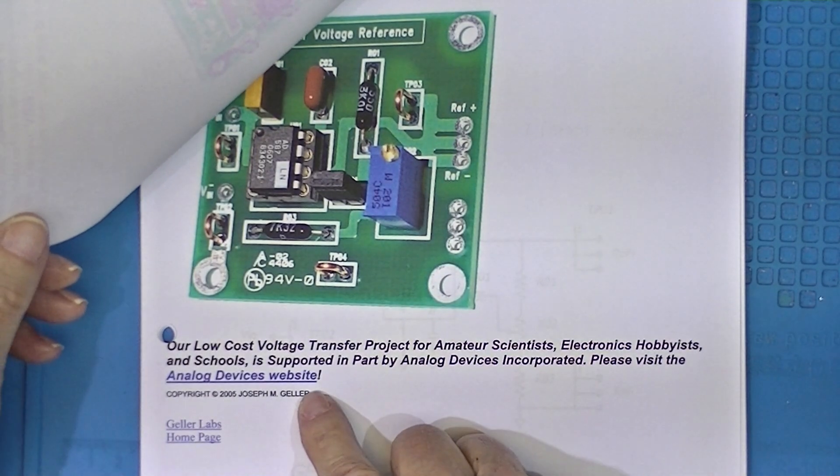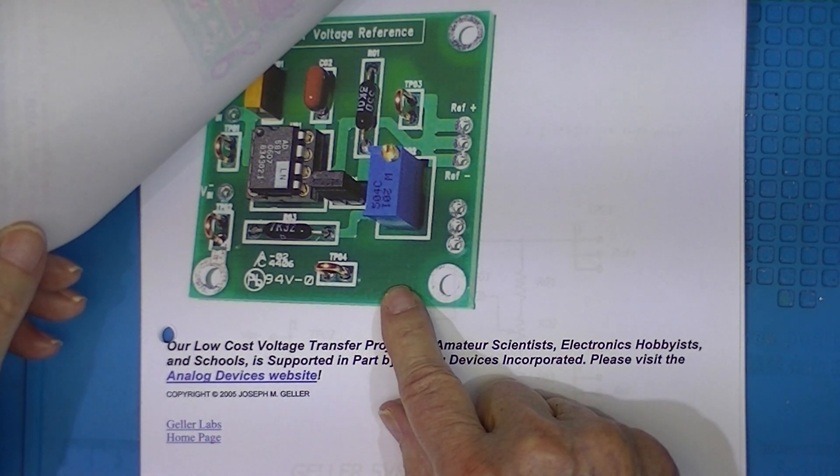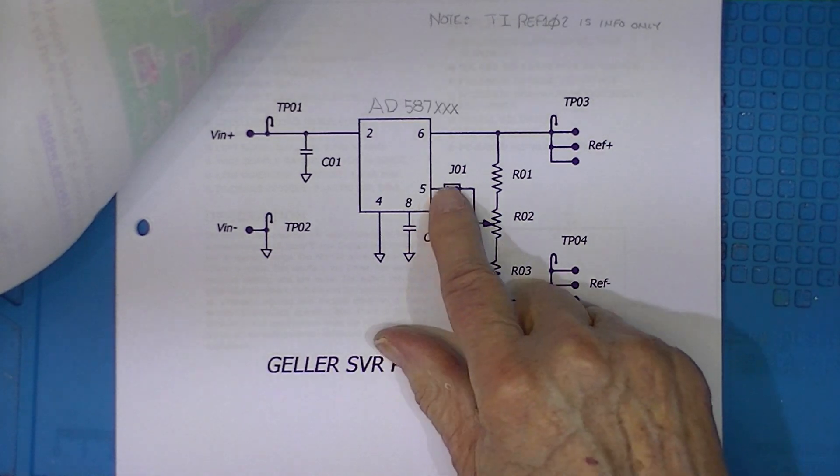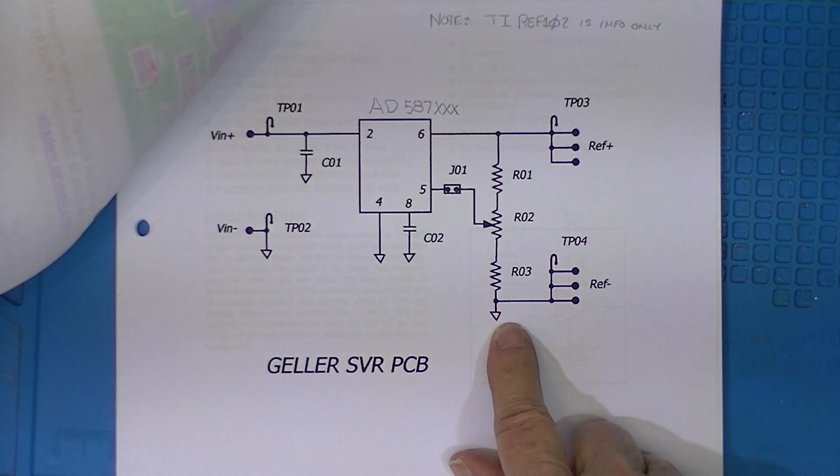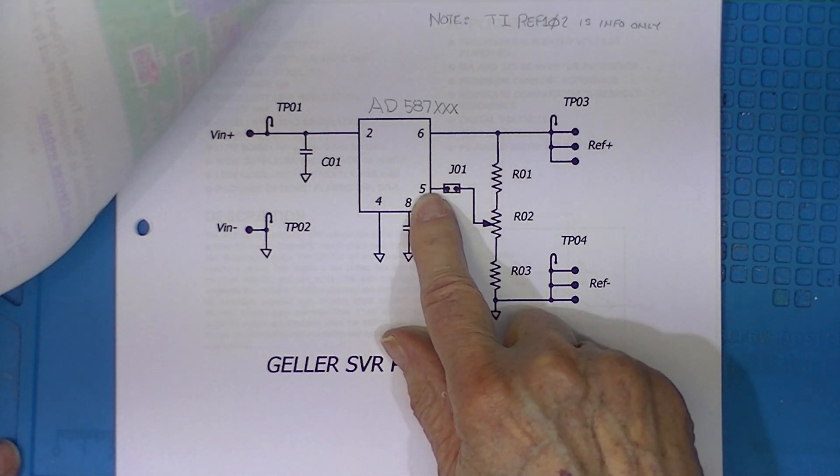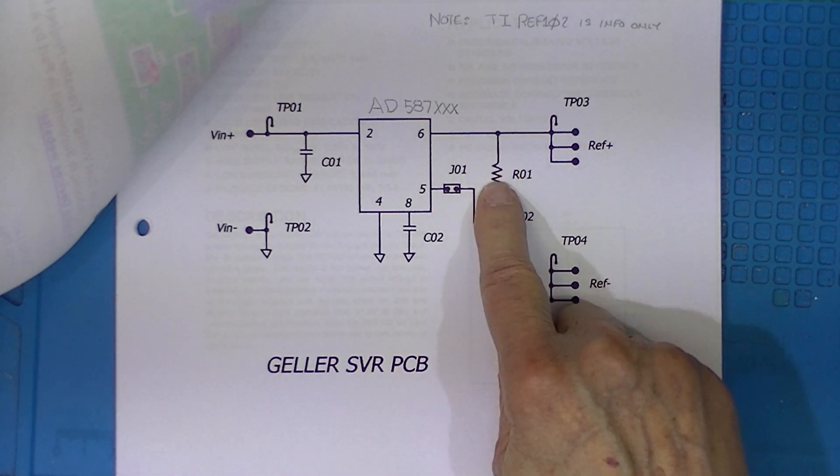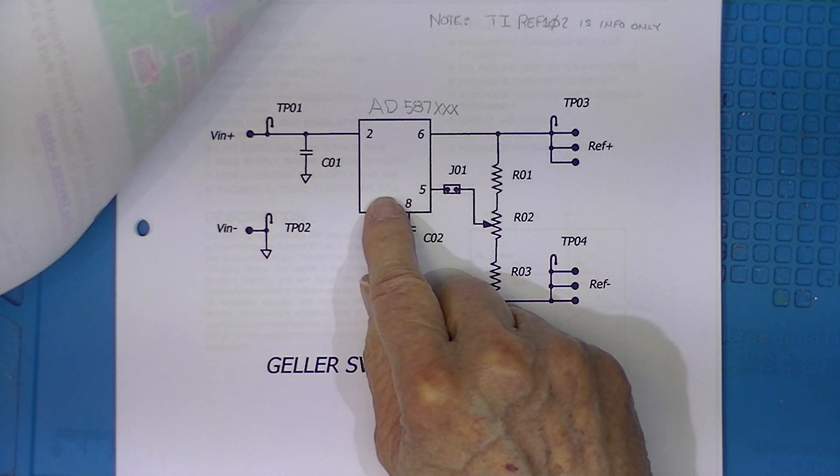I believe Mr. Geller closed up this operation in 2011, somewhere around there. Here is the schematic with the trimming circuit shown. And the trimming circuit can be disconnected from pin 5 with this jumper. If you do not have the jumper installed or if you don't have this, the chip is whatever its manufactured accuracy is.